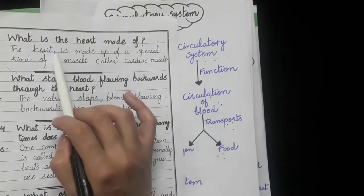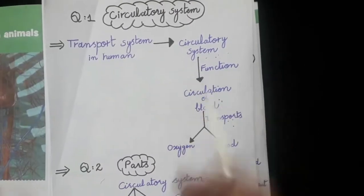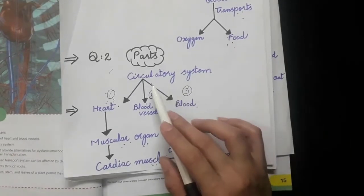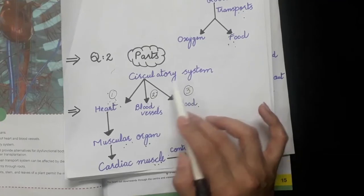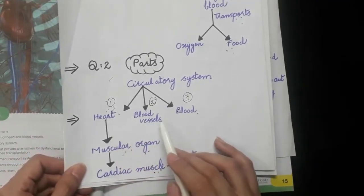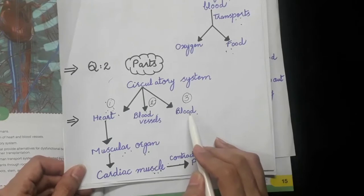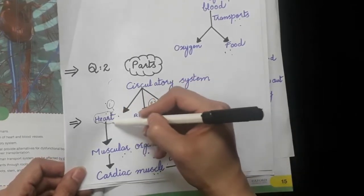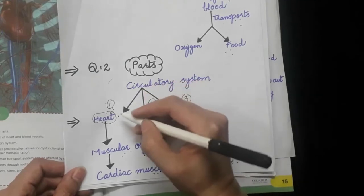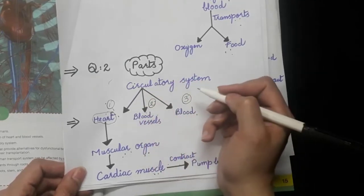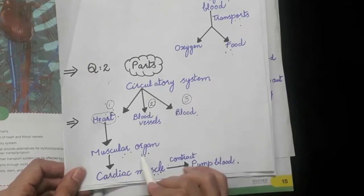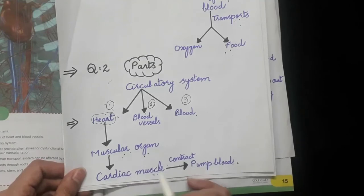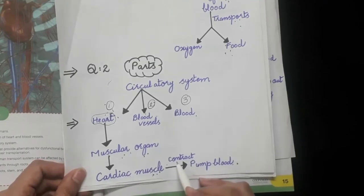The next question is: what is the heart made of? Before this, you should know that the circulatory system consists of three parts: first, the heart; second, blood vessels; and third, blood. The heart is the major organ of the circulatory system. It is a muscular organ made up of cardiac muscles, and cardiac muscles have the ability to contract.